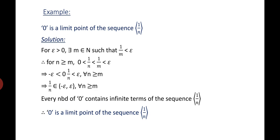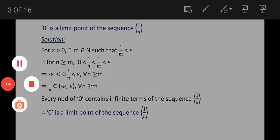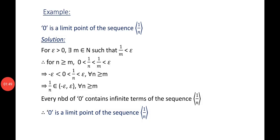So this is written as -epsilon < 0 < 1/N < epsilon. This implies 1/N belongs to (-epsilon, epsilon) for all N ≥ M. So every neighborhood of 0 contains infinitely many terms of the sequence 1/N. Therefore, 0 is a limit point of the sequence 1/N.